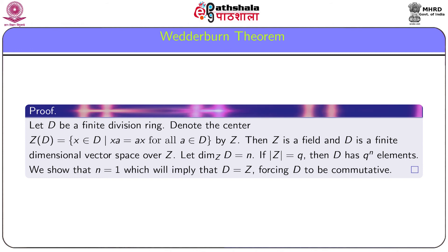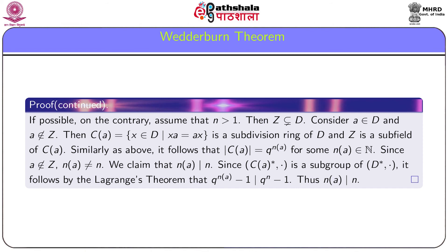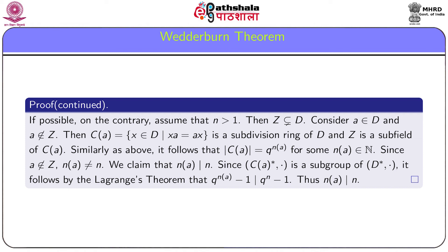We show that n = 1, which will imply D = Z, forcing D to be commutative, and thus the result will be proved. If possible, assume on the contrary that n > 1. Then the centre Z becomes a proper subset of D, so there exist elements a in D which are not in Z.